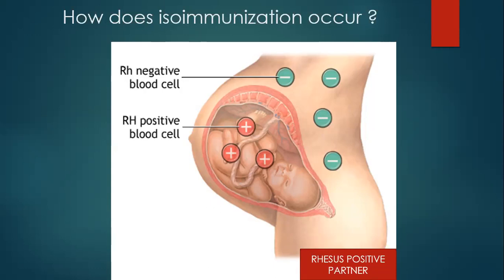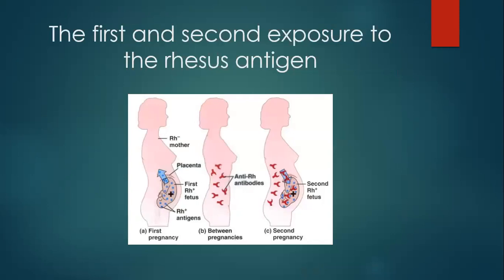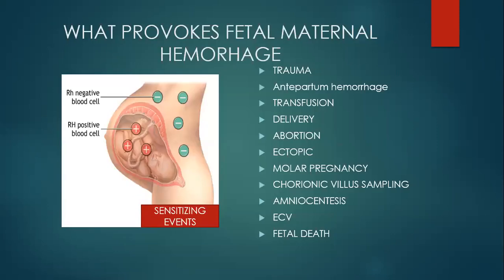The baby's red blood cells with antibodies attached to them are recognized as foreign, and the baby's reticuloendothelial system — the liver and spleen — starts destroying them. Anything with antibody attached to it is recognized as foreign and the immune system destroys it. On the second pregnancy, IgG, being a small molecule, crosses the placenta, attaches to the fetal red blood cells, and the fetus ends up with anemia, heart disease, and jaundice because the red blood cells are being destroyed.